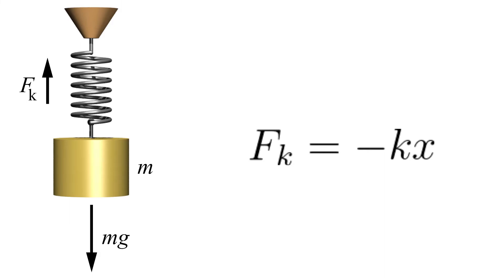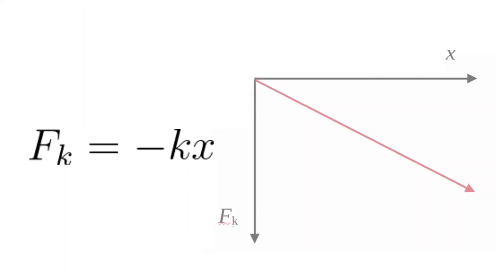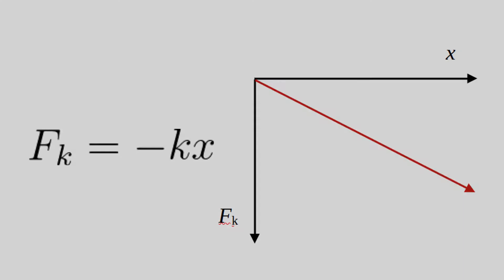If we attach a known mass to a spring, we can calculate the applied force and measure the extension of the spring. Hooke's law says the relationship between these two quantities should be linear, but is it? Let's experiment and find out.